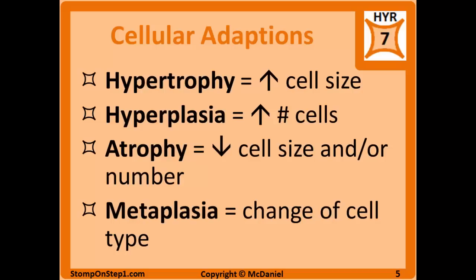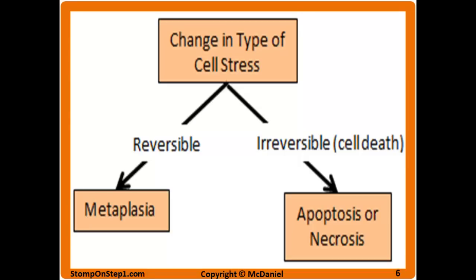Metaplasia can be physiologic or pathologic but is not cancerous on its own. However, prolonged metaplasia can turn into dysplasia, which is a precursor to cancers. We'll discuss more about the pathway to cancer in a later video. Here's a flow chart: a change in the type of cellular stress can lead to a reversible change — metaplasia and a change in cell type — or an irreversible change. If these cells cannot undergo metaplasia, they could also just die through apoptosis or necrosis.